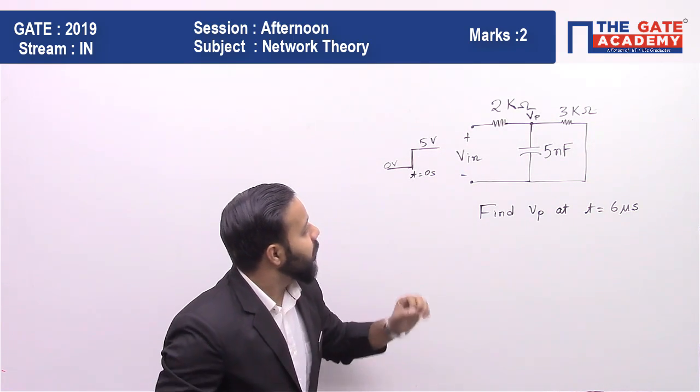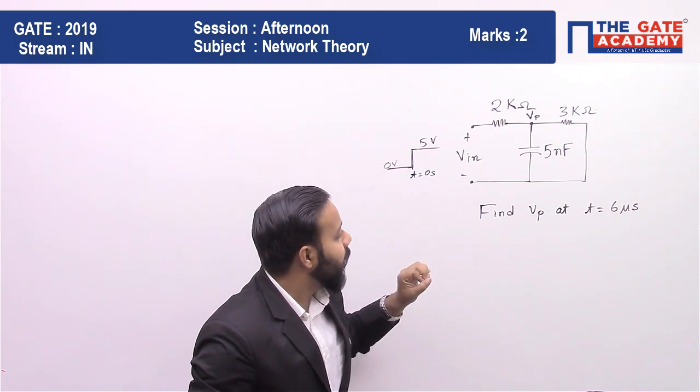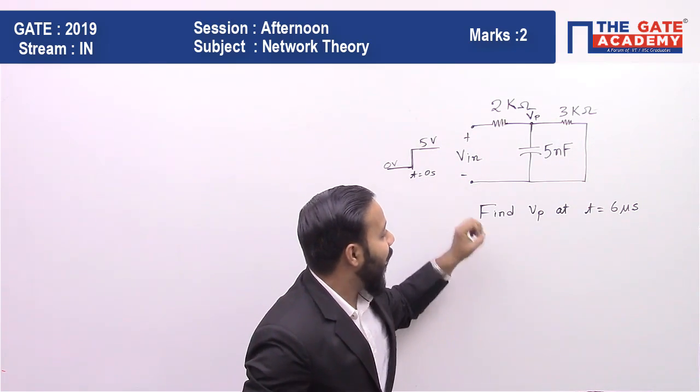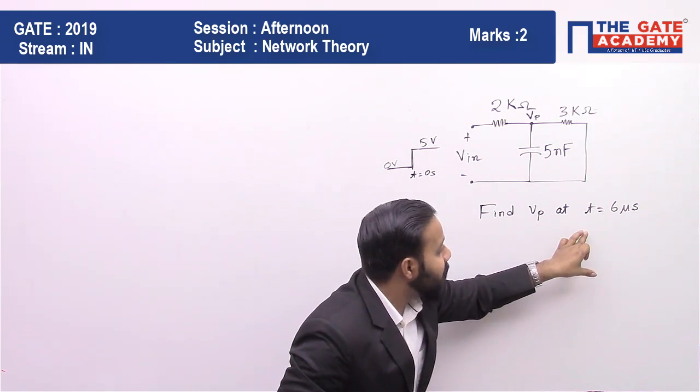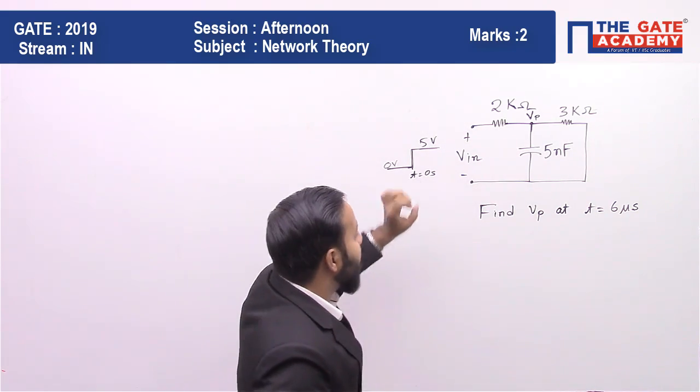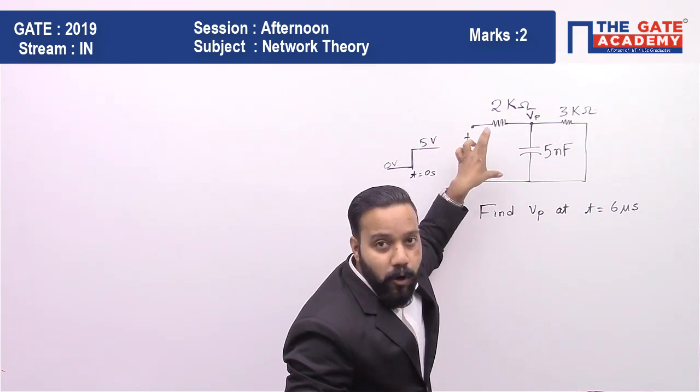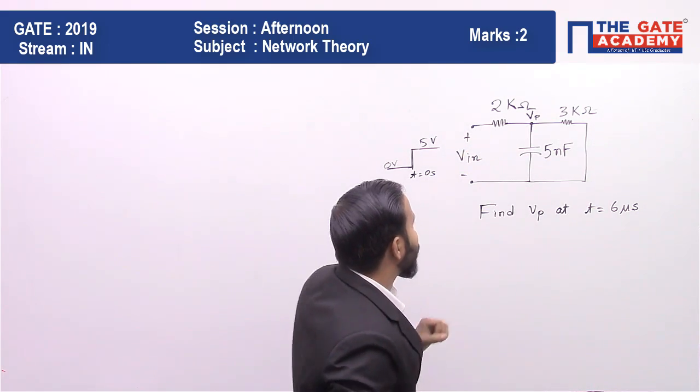Let us see what the question is. The question shows us a circuit and asks: find vp at time equals to 6 microseconds. Now vp is the voltage across the capacitor, as you can see.